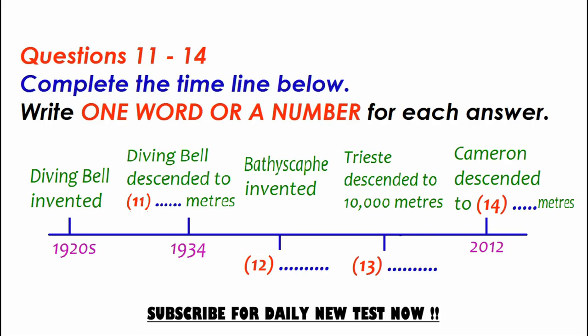Let's look at how underwater exploration vehicles have developed over the years. The first manned deep-sea exploration vessel was invented in the 1920s. It was called a bathysphere, better known as a diving bell. It was basically a round metal structure with windows, with just enough room for two men to sit in, and it was lowered into the ocean on a cable. The first descent in the diving bell took place in 1930, and in 1934 it went down to a depth of nearly a thousand metres, which was impressive for the time.